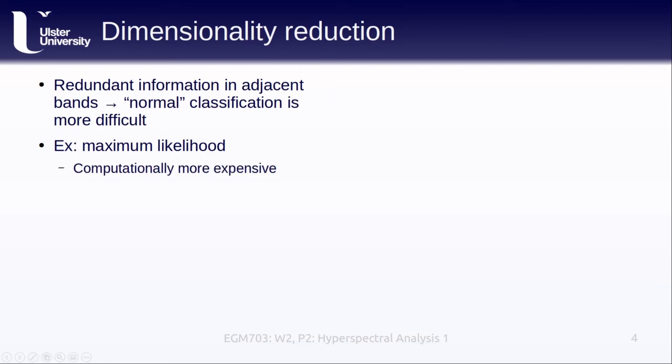Because of the high number of bands, it's also computationally more expensive, because we need significantly more training samples than we do with multispectral images. A general rule of thumb is that you need at least 10 times, and often 100 times, the number of bands worth of pixels per training sample. For an image with over 200 bands, this means that we need at least 2,000 to 20,000 pixels per training sample.